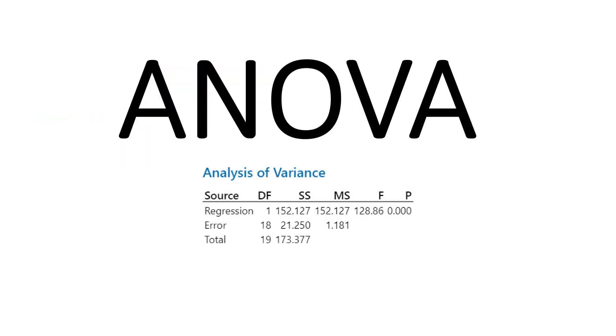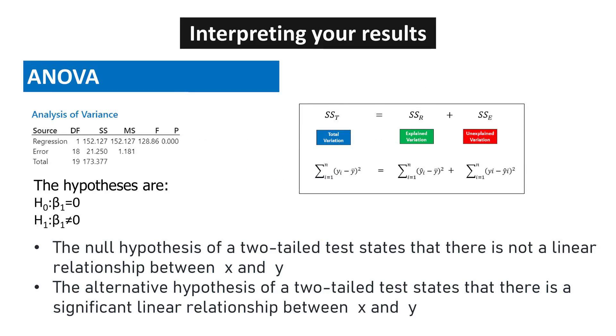Analysis of variance ANOVA. The ANOVA test helps to determine if there is a statistically significant relationship between the response and explanatory variables. The null hypothesis of a two-tailed test states that there is not a linear relationship between X and Y. The alternative hypothesis of a two-tailed test states that there is a significant linear relationship between X and Y.